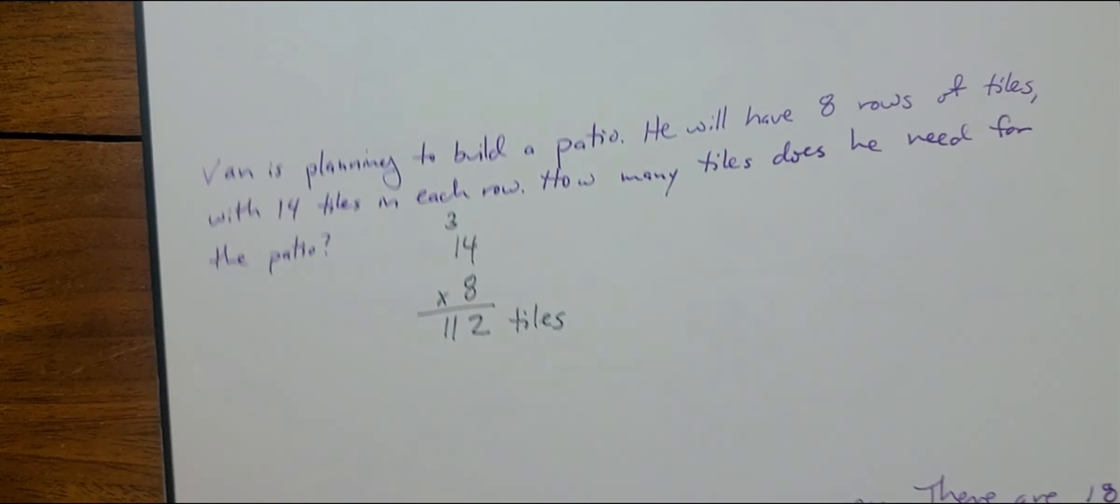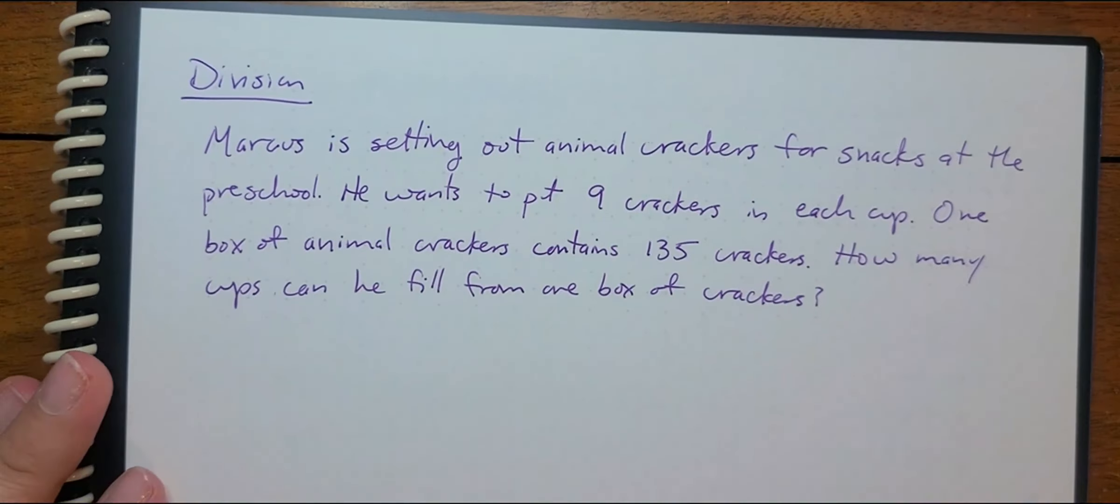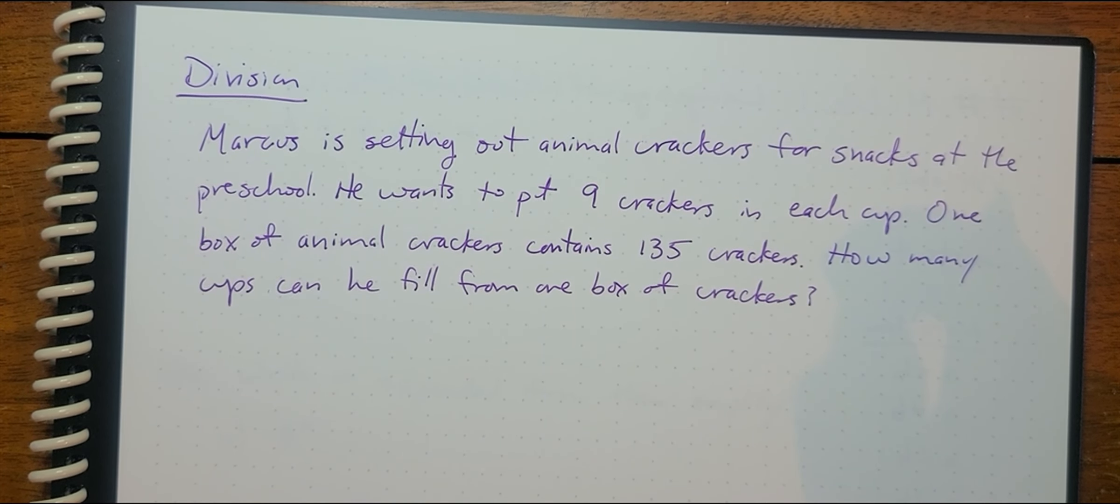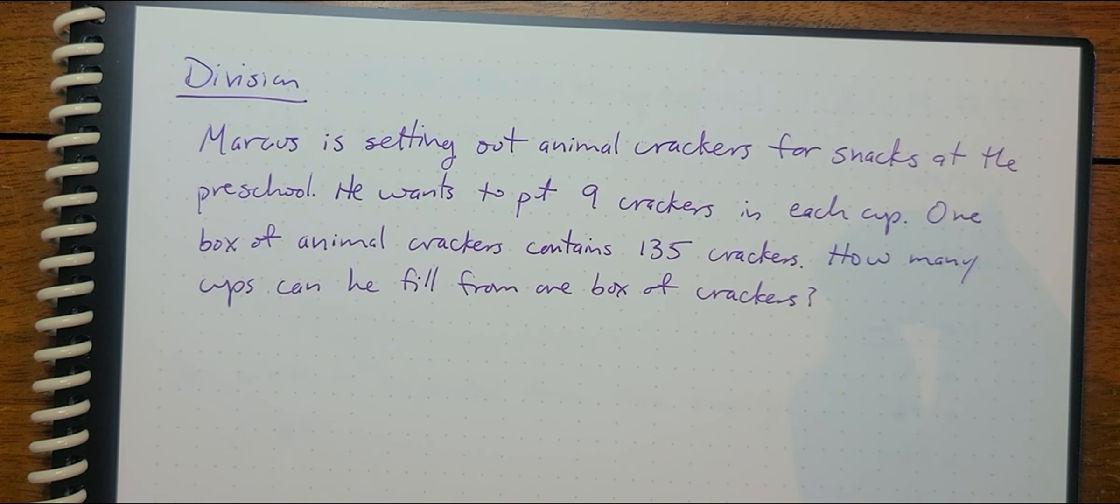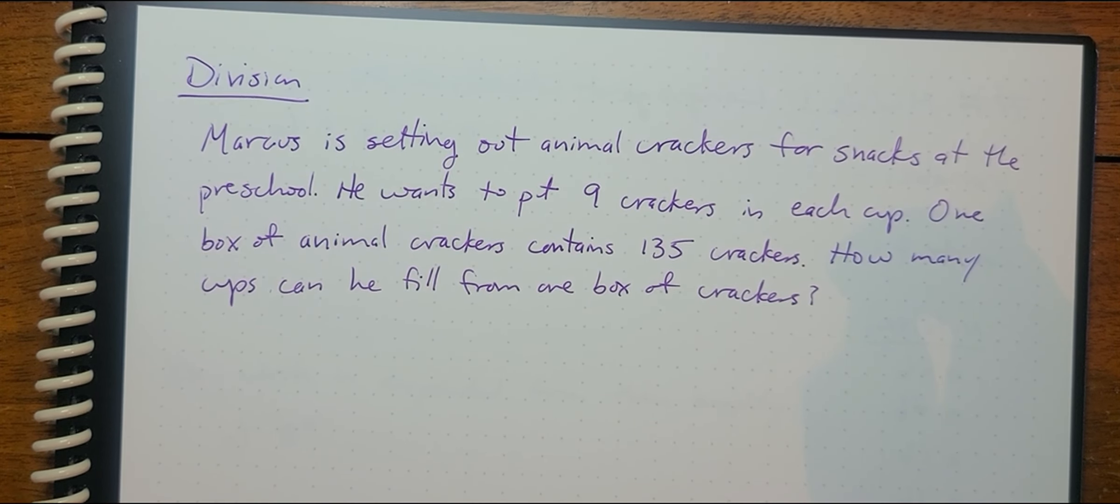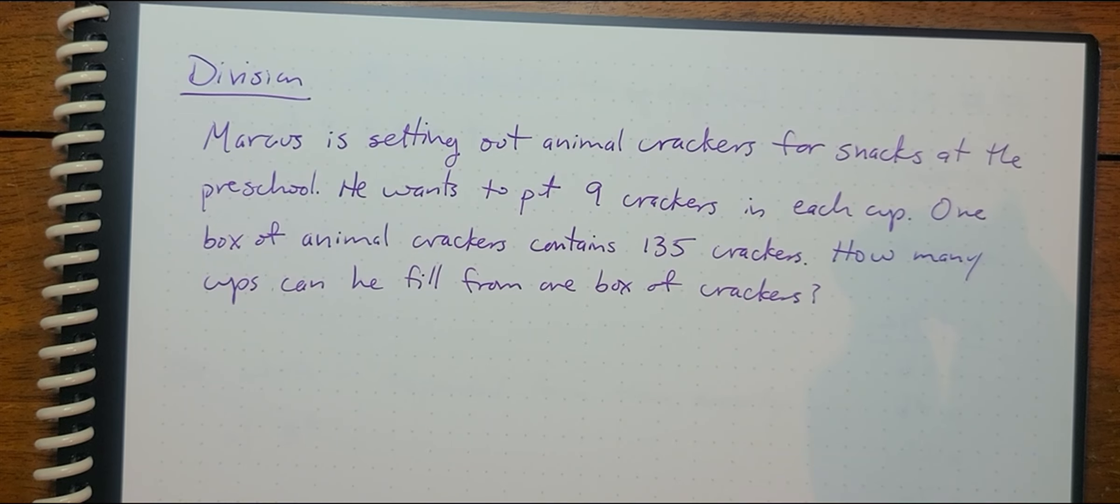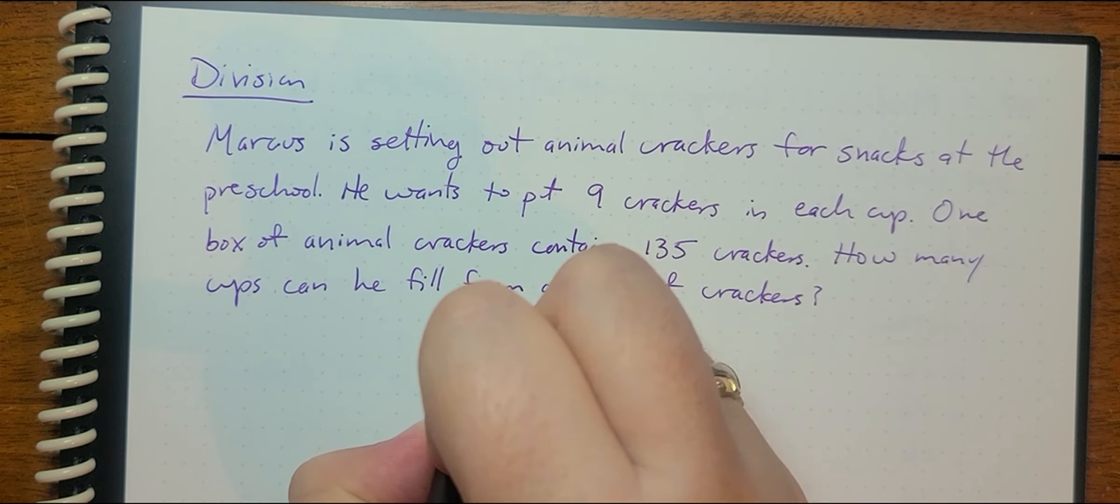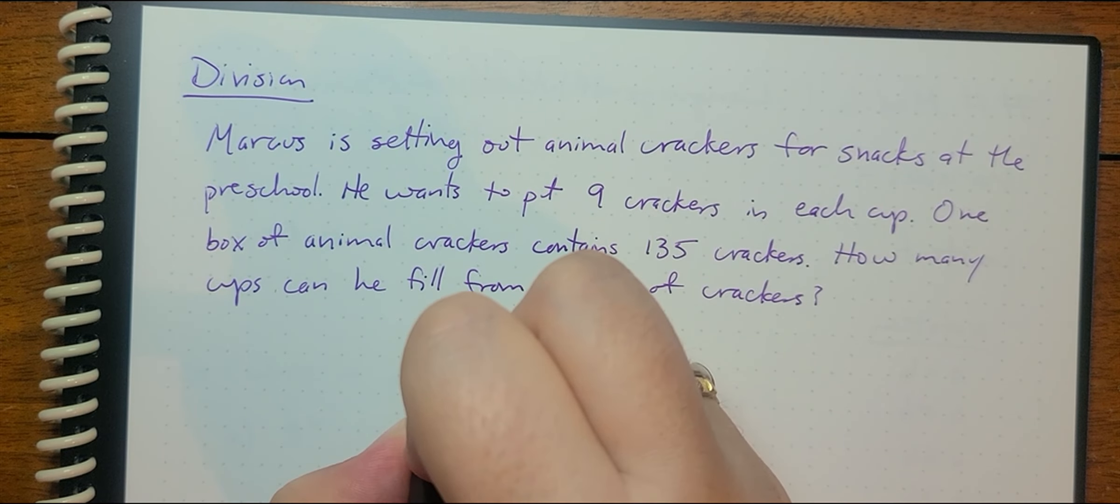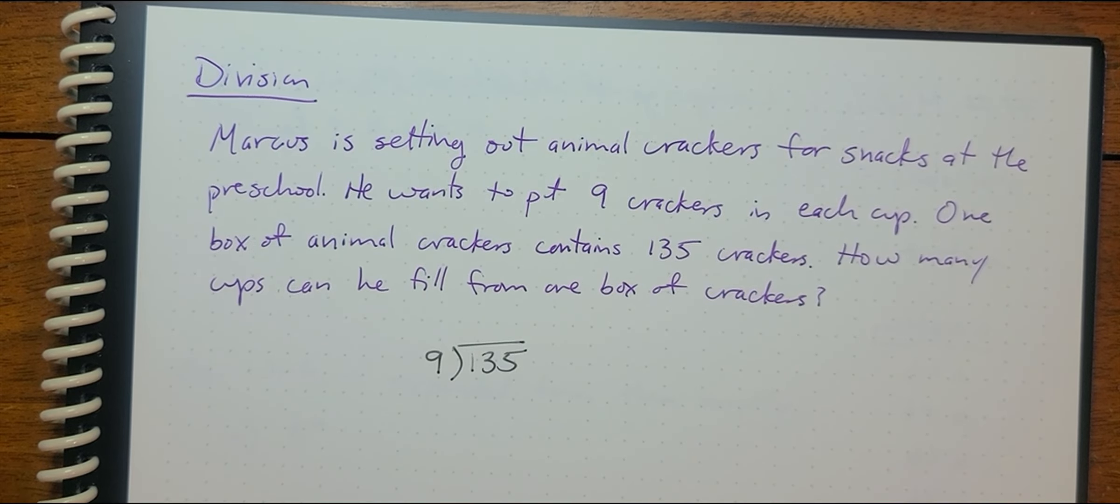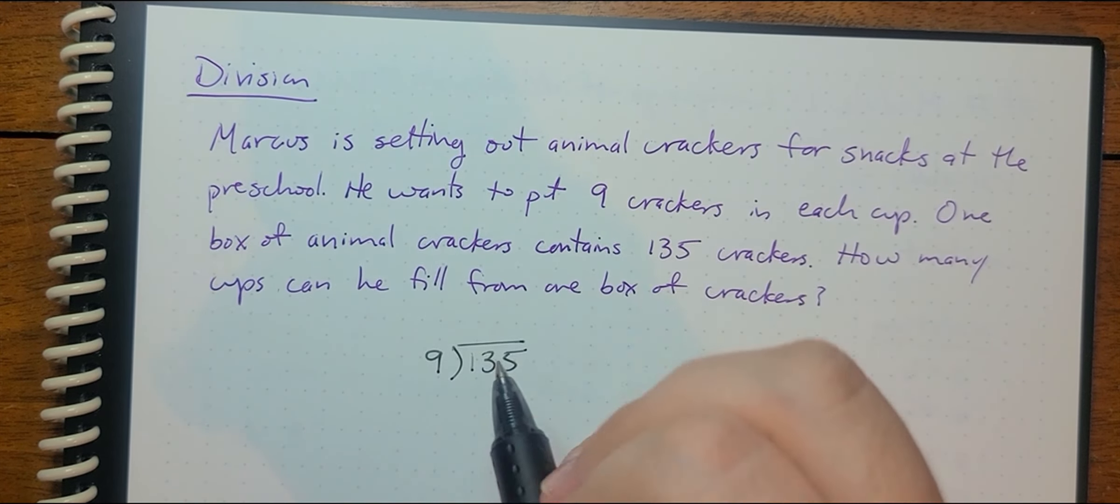And finally, we'll discuss division. Marcus is setting out animal crackers for snacks at the preschool. He wants to put nine crackers in each cup. One box of animal crackers contains 139 crackers. How many cups can he fill from one box of crackers? So we're going to take 135 crackers, that's how many he has in the total box, and we're going to divide by nine because that's how many he's going to put in each cup.